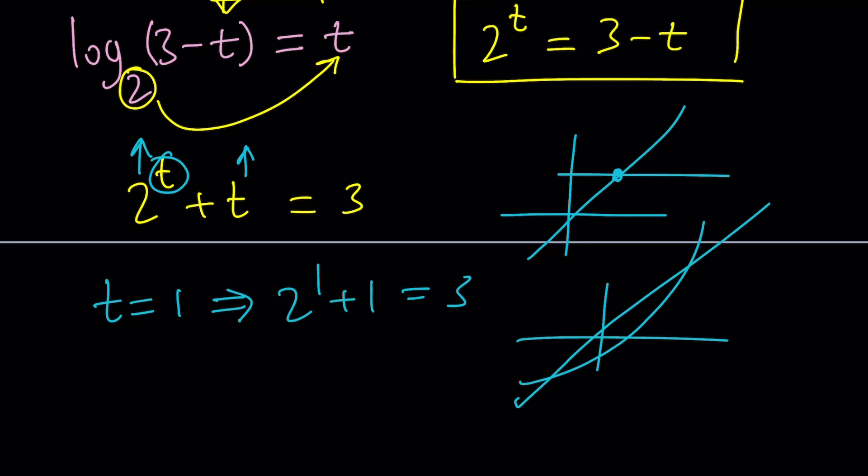Okay looks like t equals 1 is a solution. What is t equals 1 going to give us? It's going to give us 2 to the 1 plus 1 which is equal to 3. And since there's only one solution that should be it. Great. Nice. But again there's some guess and check involved. So some people don't like it.